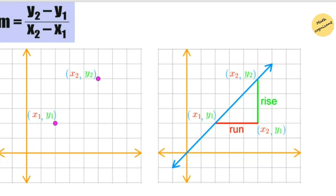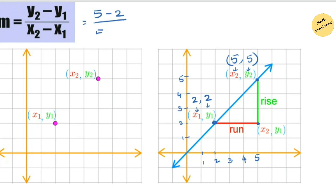When a graph shows two points, we can find the slope using the formula: y2 minus y1 over x2 minus x1. For example, with points x1 equals 2, y1 equals 2, x2 equals 5, y2 equals 5: substituting gives (5 minus 2) over (5 minus 2), which equals 3 over 3, which equals 1. So the slope of these two points is 1.